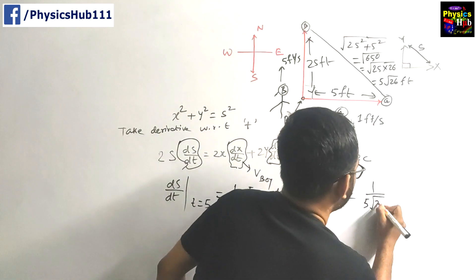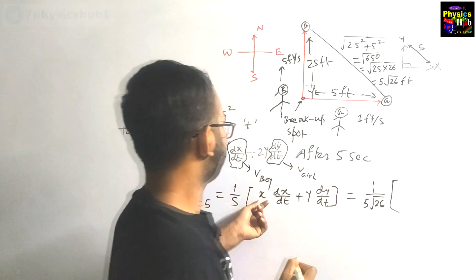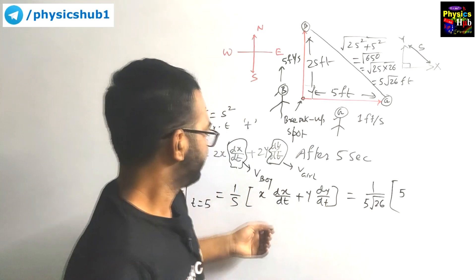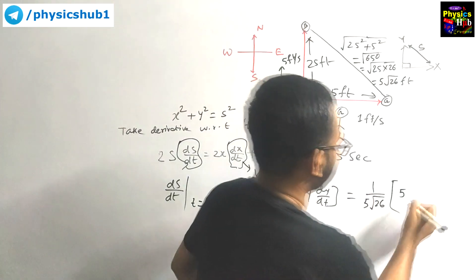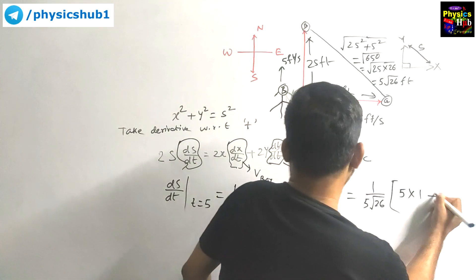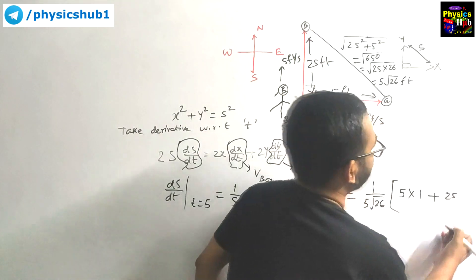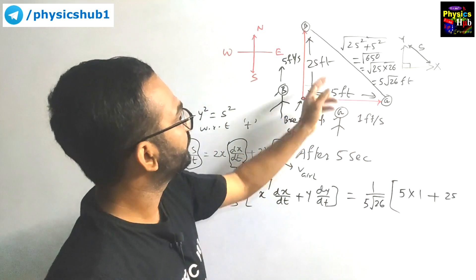So just put the value of s = 5√26 feet, and x = 5 feet after 5 seconds. dx/dt, its velocity is 1, plus y = 25, times dy/dt = 5.